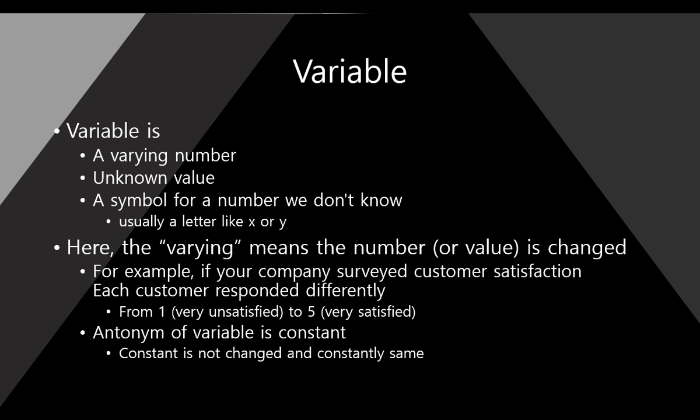Here, the varying means the number or value is changed. For example, if your company surveyed your customer about customer satisfaction, each customer just responded differently from one to five. Here, one means very unsatisfied. Five means very satisfied. So, some of your customers just check number three or number four, sometimes number five. Here, the number from one to five are totally different from each customer.